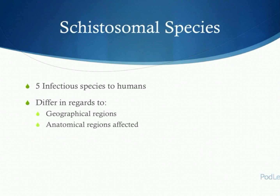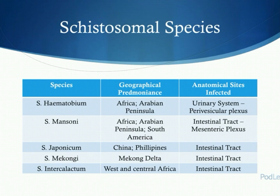There are a number of schistosomal species which exist that affect avian and mammalian creatures. However, there are only five species known to affect humans. These species differ in regards to the geographical regions in which they're found and also the anatomical regions which they affect. The species which cause the most disease, and the two we'll focus on, are haematobium, or urinary schistosomiasis, where the adult worms live in the perivesicular plexus, and mansoni, which affects the intestinal tract with adult worms residing in the mesenteric plexus. The other species — japonicum, mekongi, and intercalatum — all affect the intestinal tract but have a more narrow geographical spread.